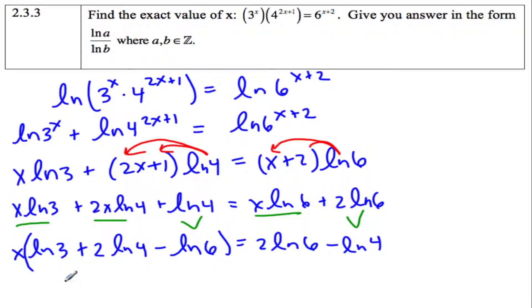And now I have x equals, I'm going to divide this whole piece, that's 2 ln 6 minus ln 4 over ln 3 plus 2 ln 4 minus ln 6.